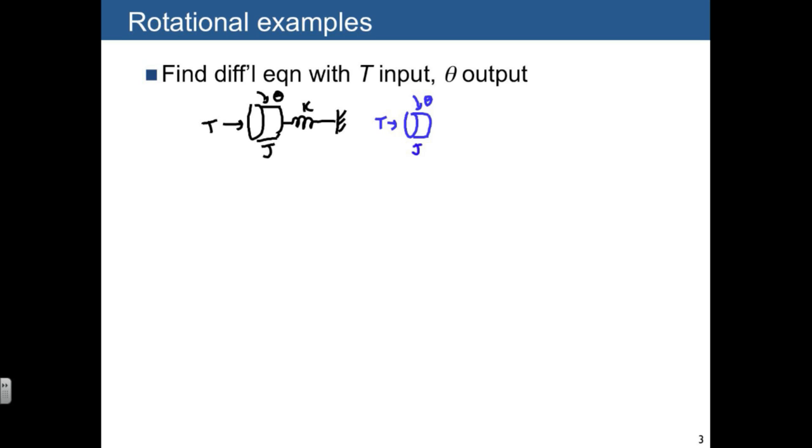and then we have the spring torque, which will draw us equal and opposite on the two ends, followed by ground. The displacements of the two ends of the spring we'll label as zero and theta.